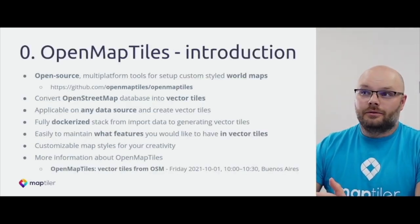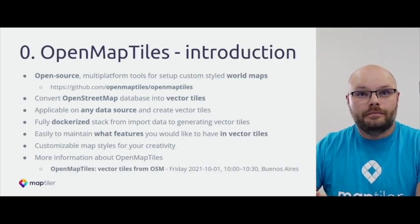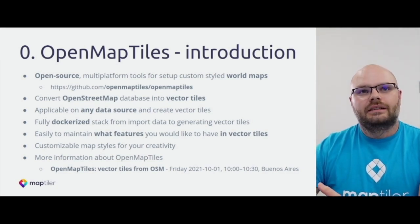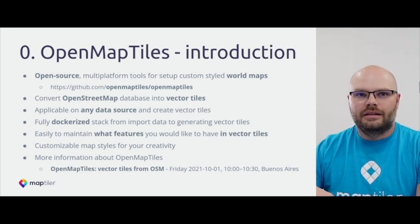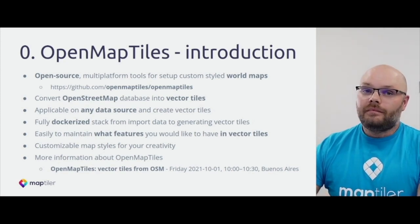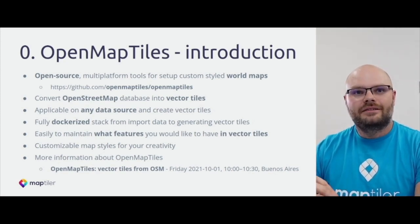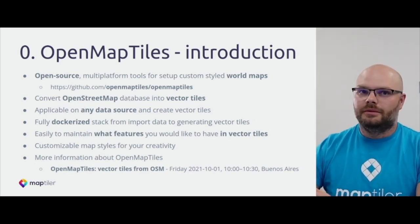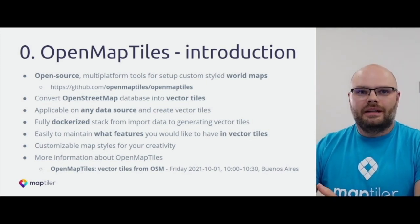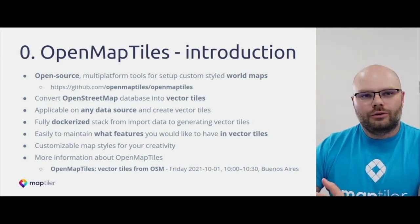First I would like to introduce the OpenMapTiles project. It is an open source project which allows you to convert OpenStreetMap or any other spatial data from PostgreSQL to vector tiles in MBTiles format. There are basically two projects: OpenMapTiles, which defines a schema - the schema defines which data will be shown at a particular zoom level - and the second project is OpenMapTiles Tools, which contains all tools necessary for importing OSM or any other data into PostgreSQL and generating tiles.